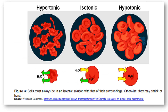Cells must always be in an isotonic solution with their surroundings; otherwise, they may shrink or burst. When the solution outside the cell has higher solute concentration — the cell is in hypertonic solution — water will move out of the cell to dissolve the extra solute, and the cell loses water, shrinks, and dies. On the other hand, when the solution outside has lower solute concentration — the cell is in hypotonic solution — water from the surrounding moves into the cell, causing it to swell and burst. A good application is making daing or dried fish: when you put a lot of salt on the fish, water from the fish cells moves out, speeding up the drying process.